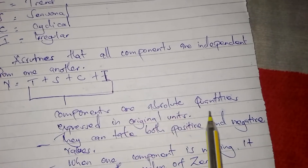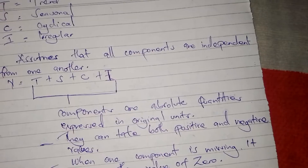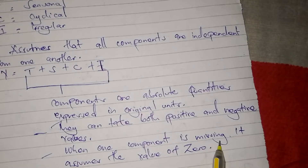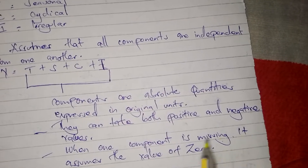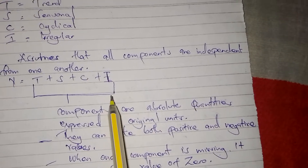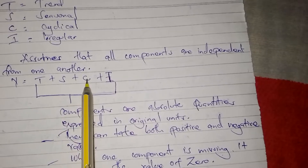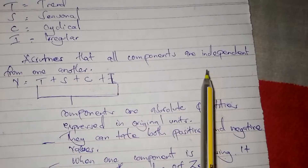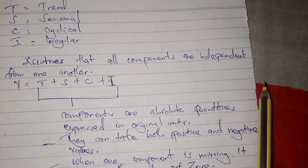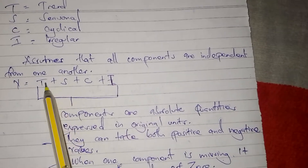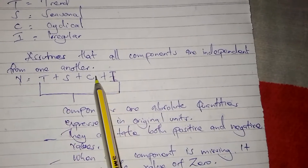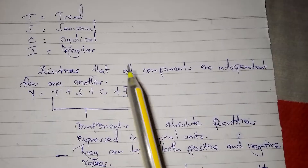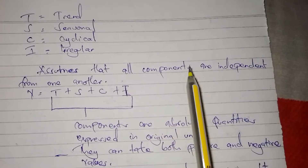Components are absolute quantities expressed in original units. They take both positive and negative values. When one component is missing, it assumes the value of zero. So if they only give you three components in the question, the component that is not given you put as zero — you do not look for it. If they don't give you trend it becomes zero, if they don't give you cyclical it becomes zero.